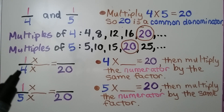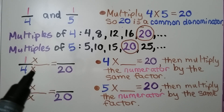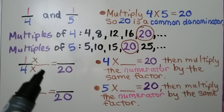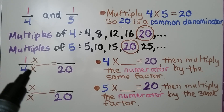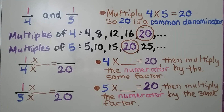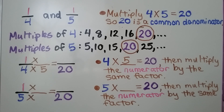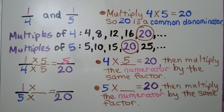Once we know that they have 20 in common, we use the information — the 4 and the 20 — to help us find the factor it's being multiplied by to become 20. We think: 4 times some number is equal to 20. 4 times 5 is equal to 20. We multiply the numerator by that same factor, 5. Our new fraction is 5/20, and it's equivalent to 1/4.